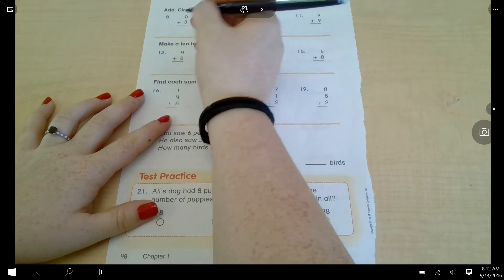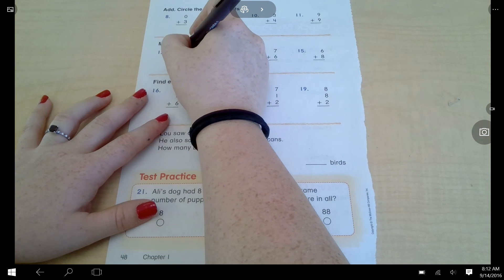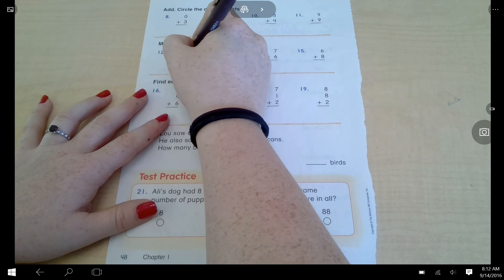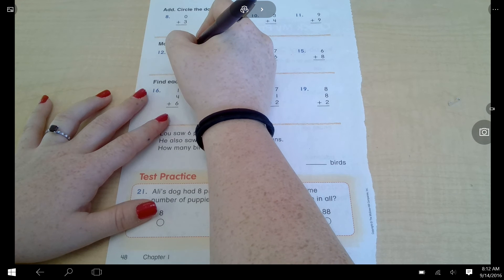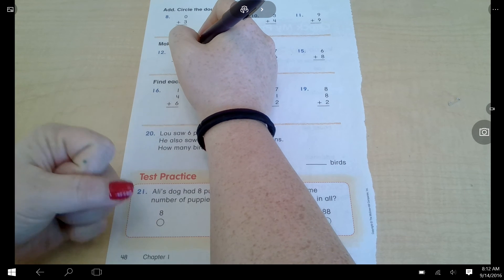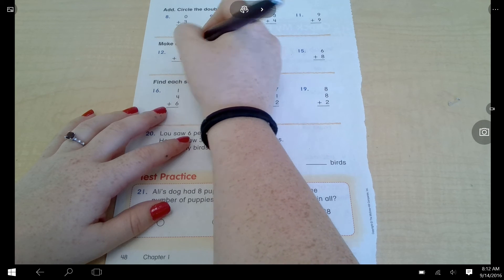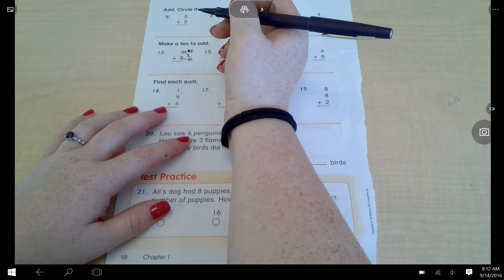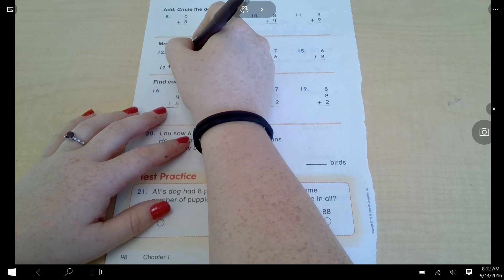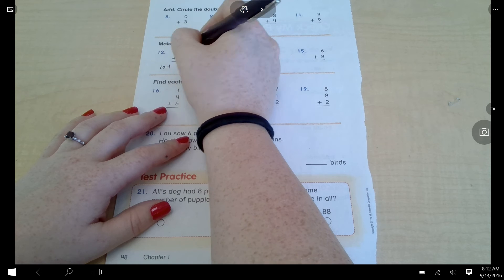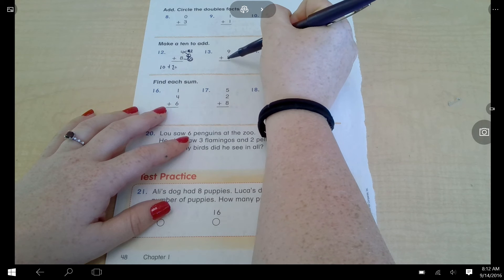I need two more to make this eight a ten, so I'm going to put two here. I'm going to make that a ten. Two plus something equals four. Two, three, four. Oops, two. So now I have ten plus two because I use this number and this number. Ten plus two equals five.